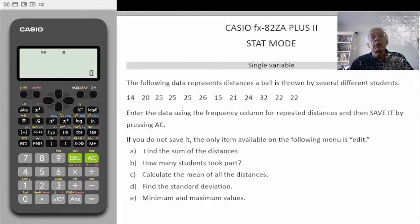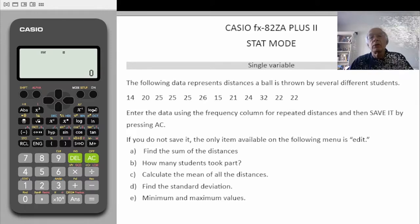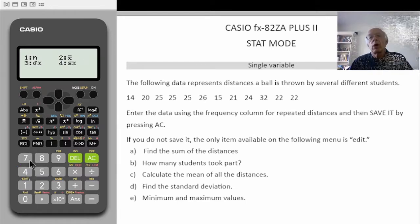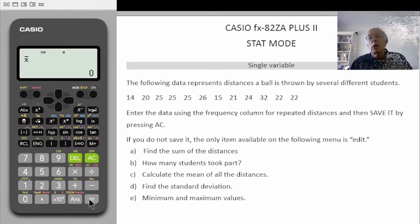Number c: calculate the mean of the distances. Shift, stat — it is a variable so we go to 4. Number 2 is the mean, so we select 2, equals, and that is the mean of the data. Clear the screen.